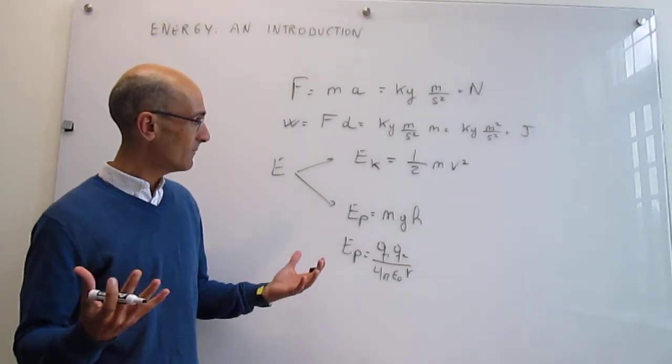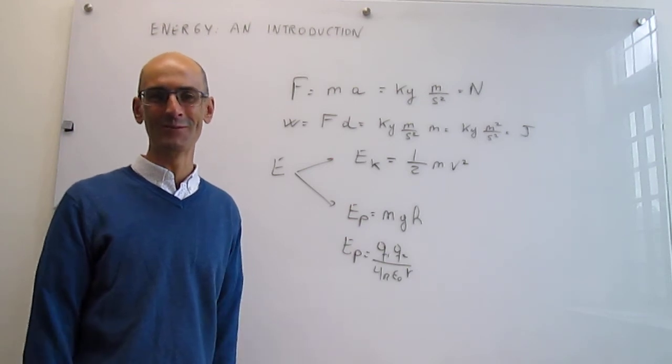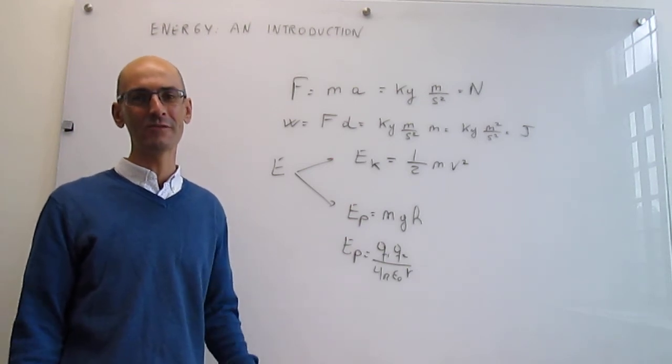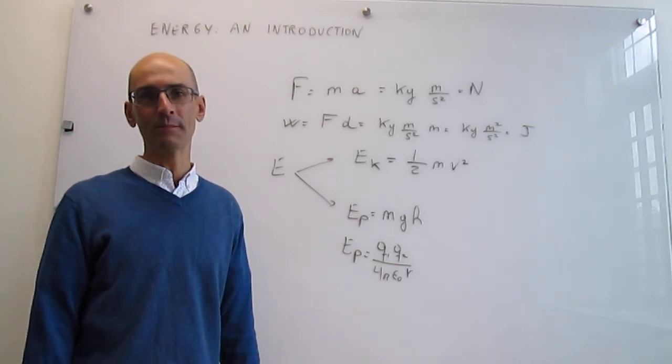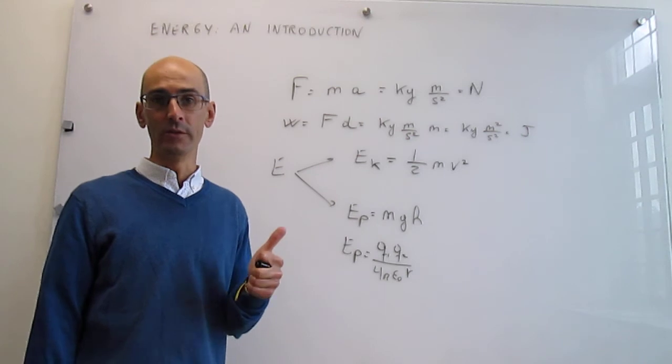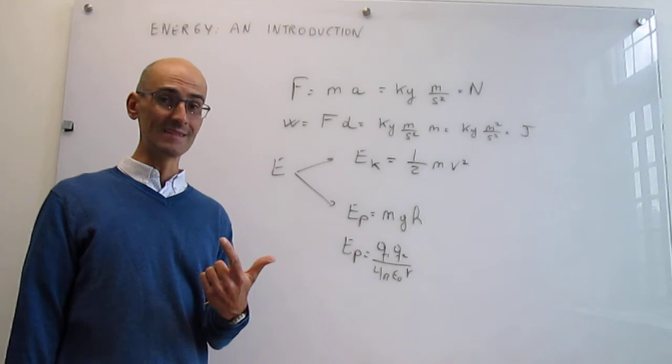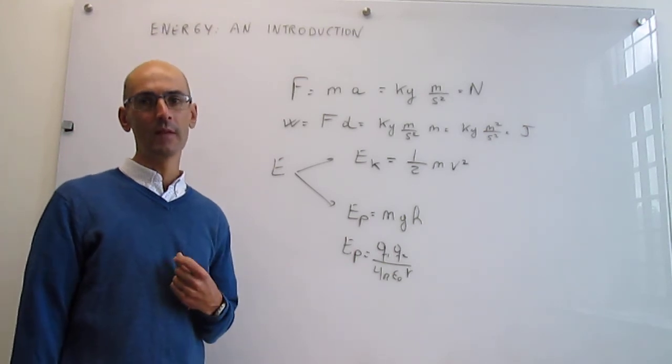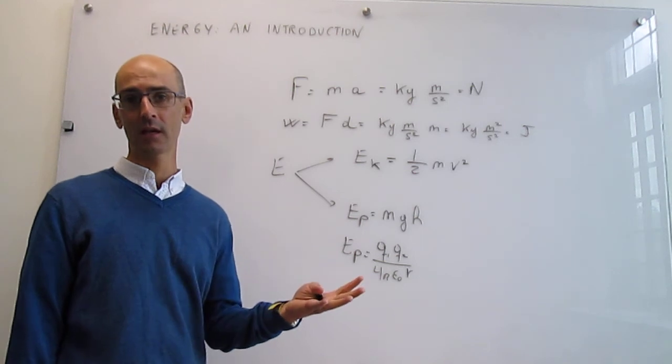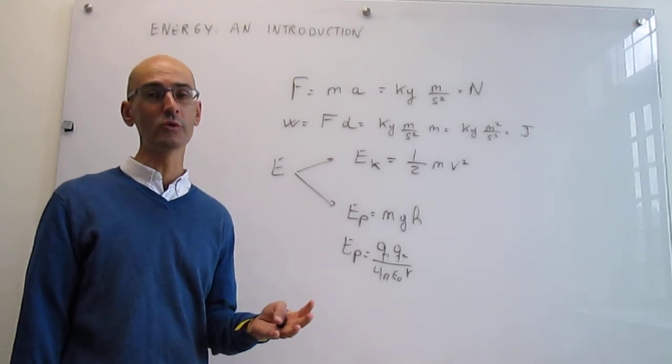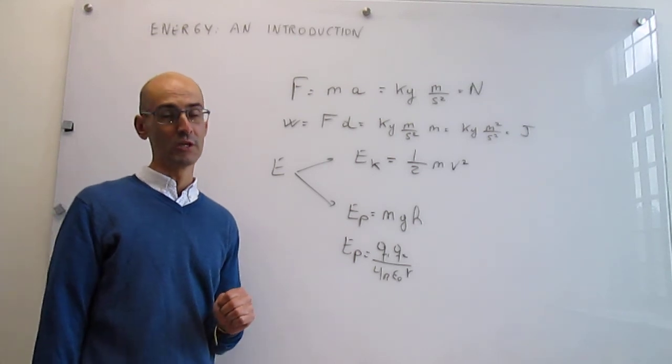To wrap up this video, we've provided a brief introduction to energy, force, and work. At this point, it's important to know that the units of energy are joules, the definition is the ability to do work, and there are two types of energy: kinetic, which is due to motion, and potential, which is due to position.